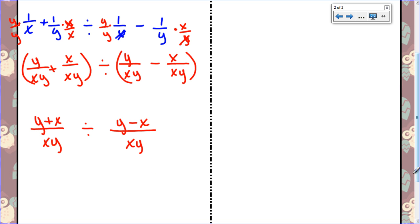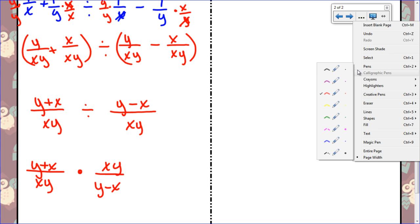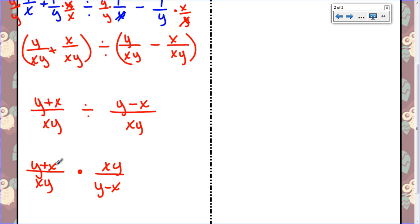So now I'm going to keep change flip. I'm going to keep my denominator and my numerator. I said that backwards. I'm going to keep this fraction the same. Change to multiplication. Flip xy over y minus x. I'll change my colors so you can see me cross stuff off. And so y plus x doesn't have anything to cancel with, but this xy will cancel that xy. So what I am left with is y plus x over y minus x. That's it.